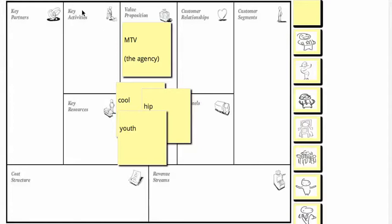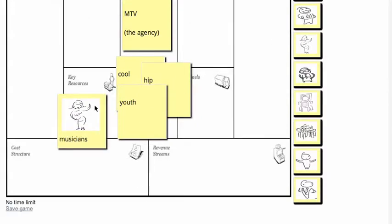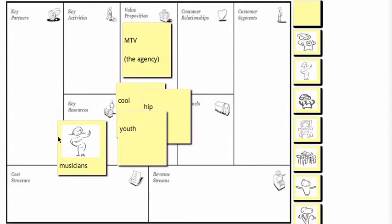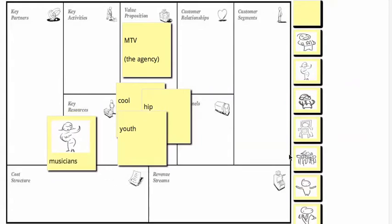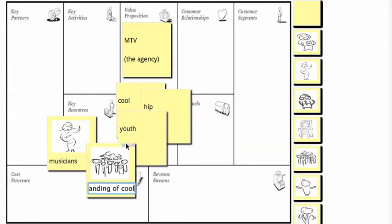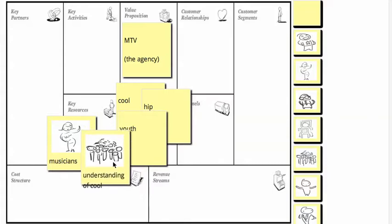In doing that, some of these things they do themselves in-house. Some they outsource to partners, probably more than you would think. They have some resources which enable them to deliver this value proposition. So their resources are either an actual or an implied relationship with musicians, and they've also got an understanding of what makes something cool.